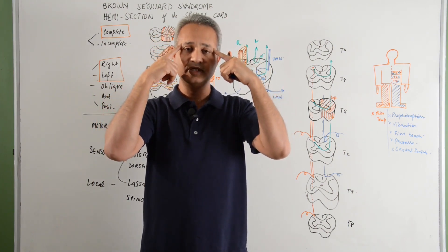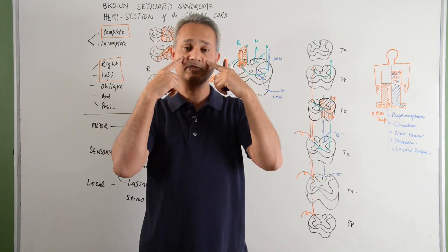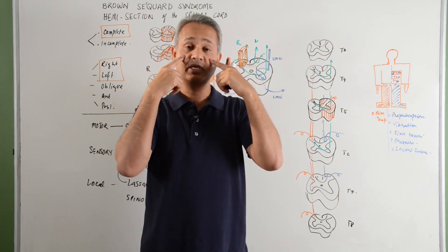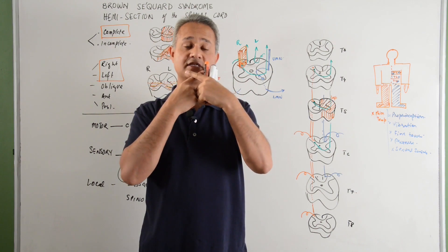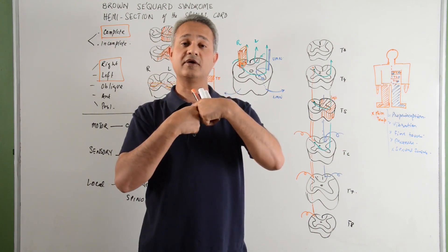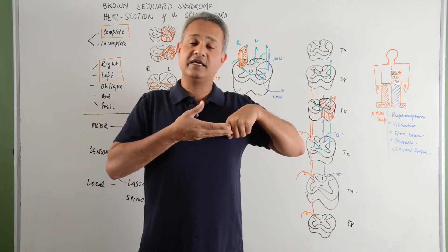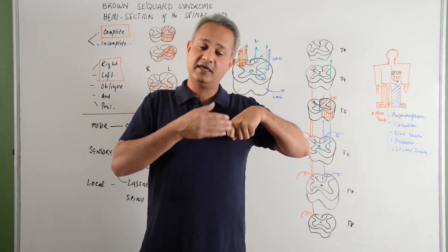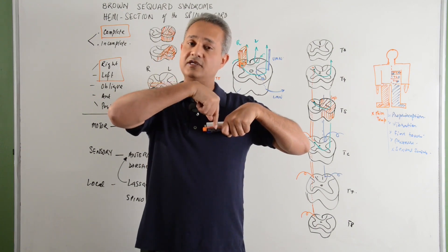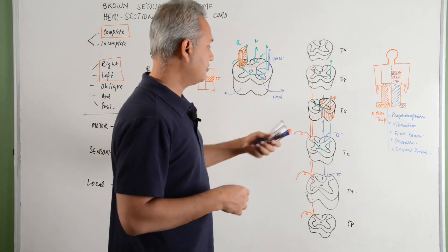Then it passes through the midbrain, pons, reaches the medulla, makes the pyramid there and then decussates to the other side and starts going down. In the spinal cord, if there is an injury on the left side, then the left side corticospinal tract would be injured. Let us see what happens here.